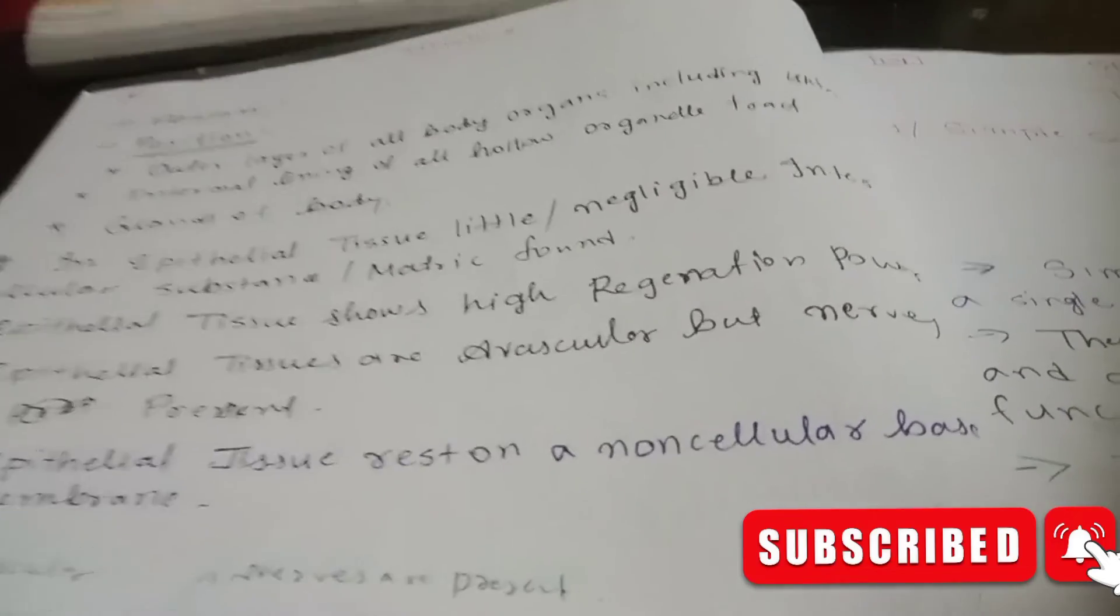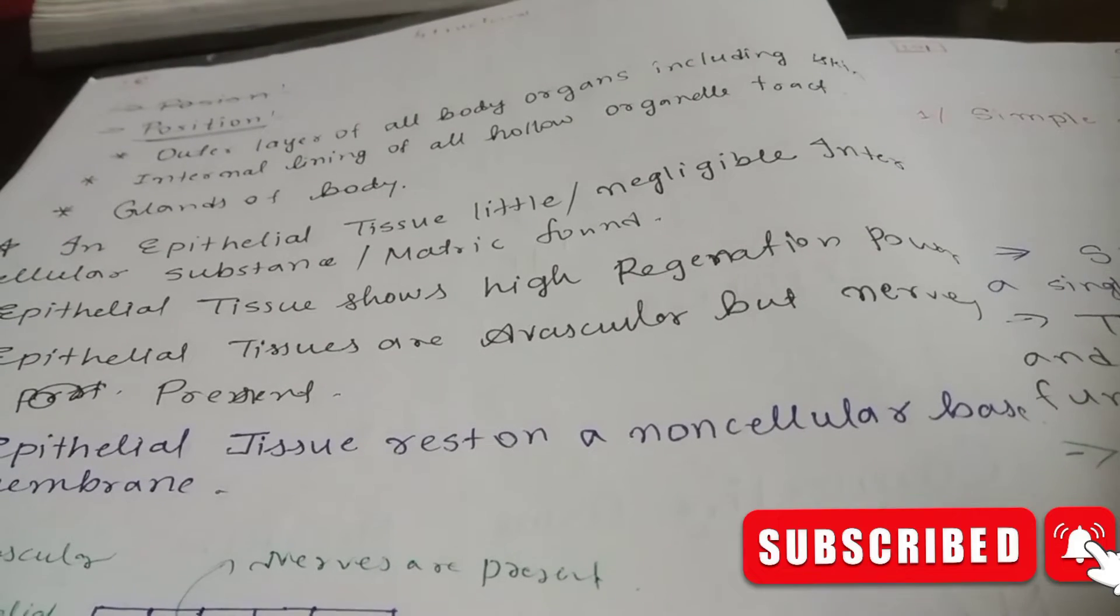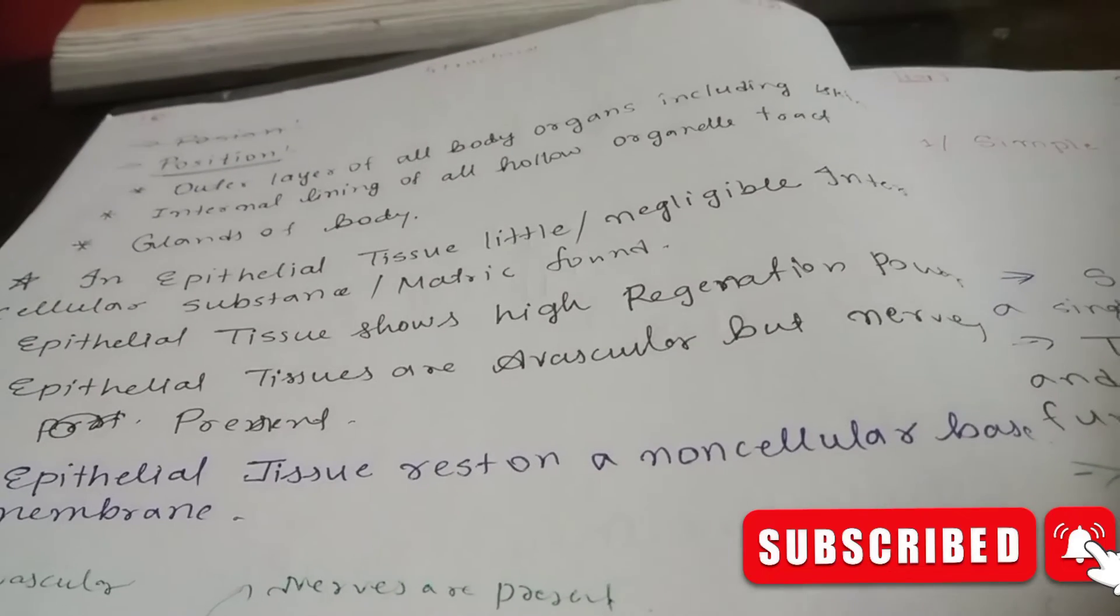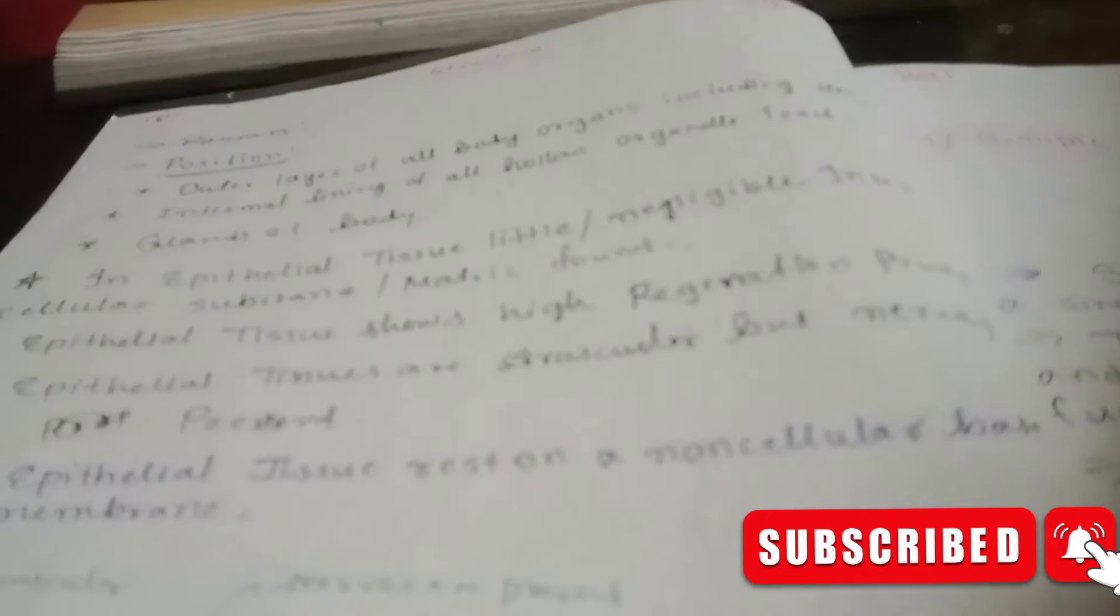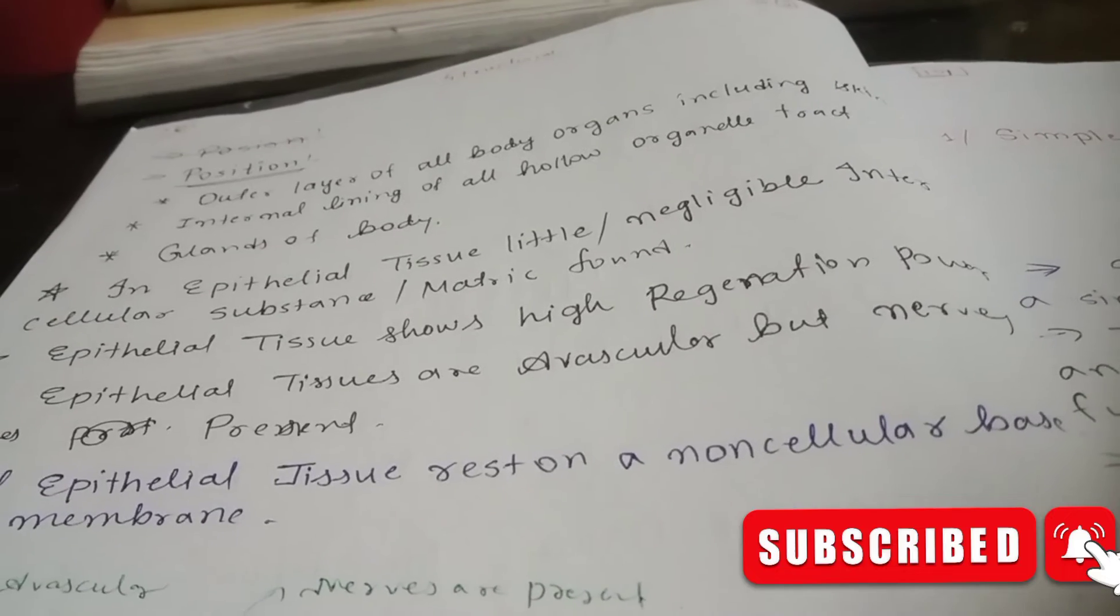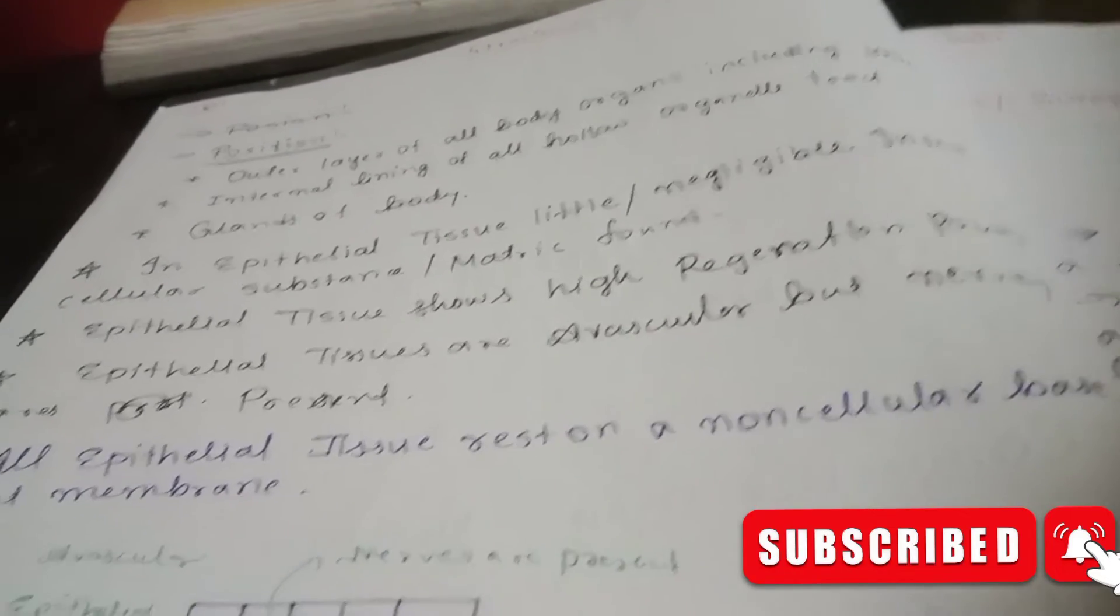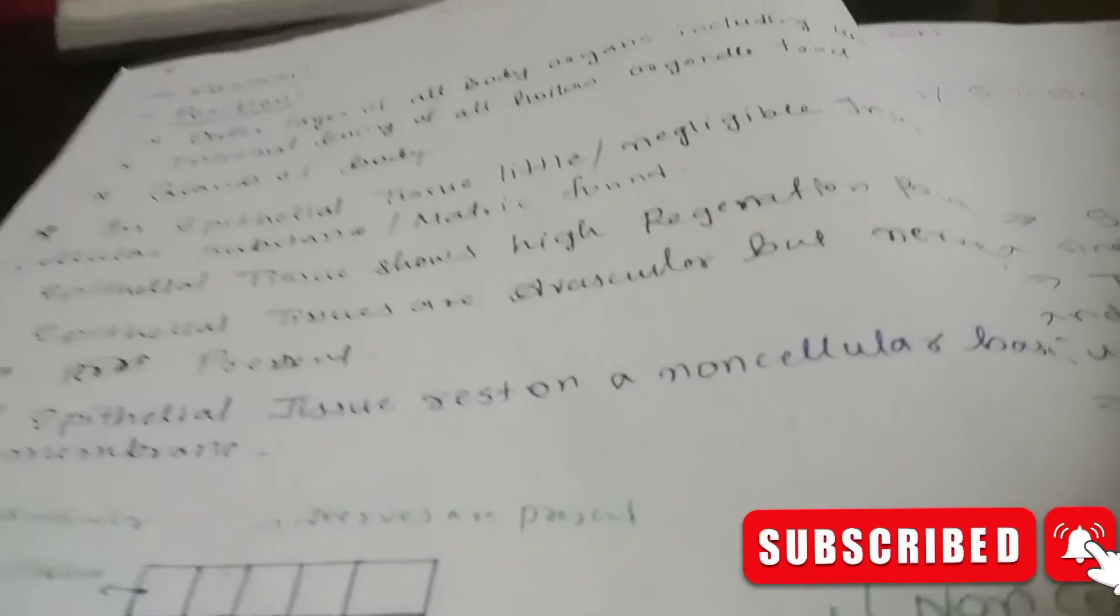Next, the internal lining of all hollow organs. Any hollow organs have epithelial tissue present. The glands of the body also have this epithelial tissue.